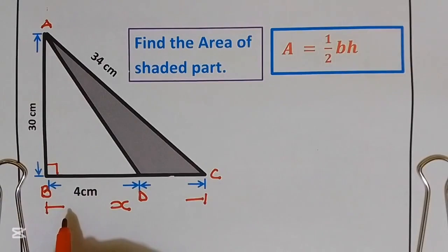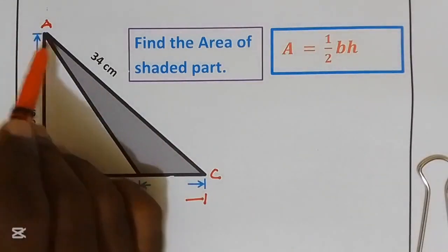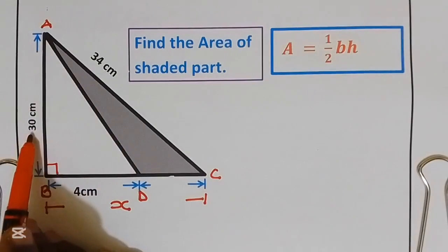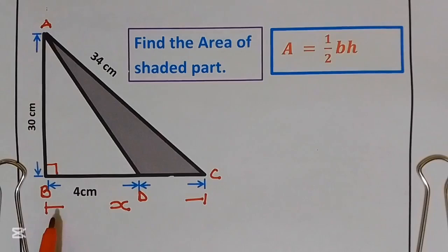First of all, I'm going to use the Pythagorean theorem to get distance X by using the biggest triangle that has a hypotenuse of 34 and an altitude of 30.